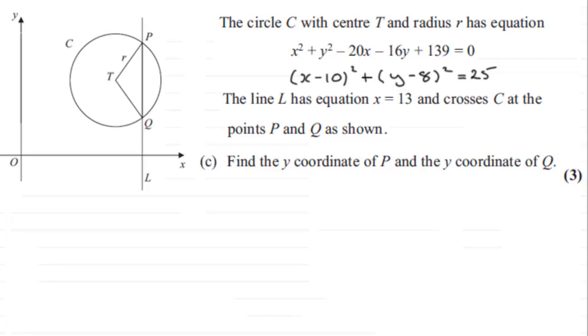Welcome back if you had a go. Well, we know then that the equation of this line L is x equals 13. So this point P and this point Q, their x coordinates will be 13.